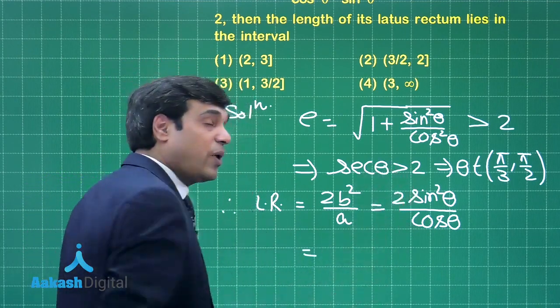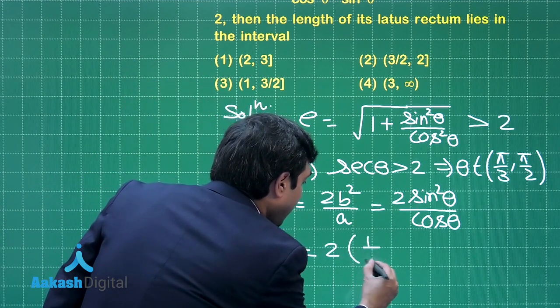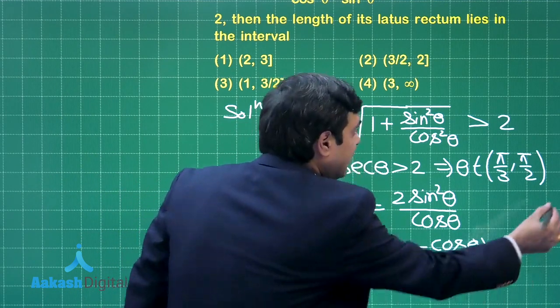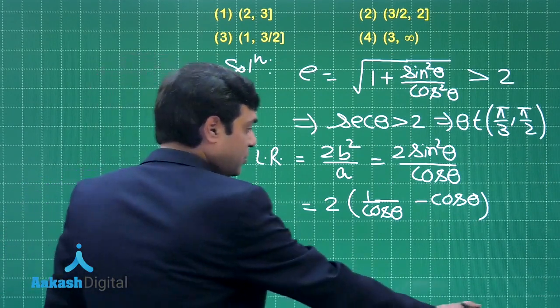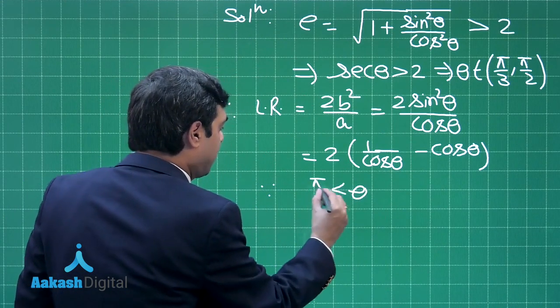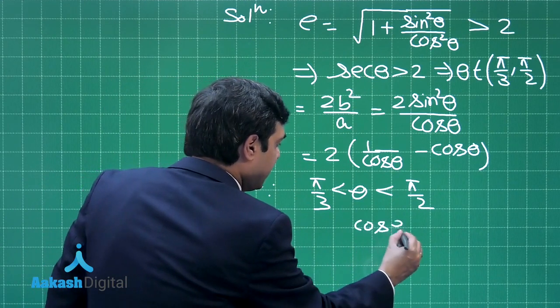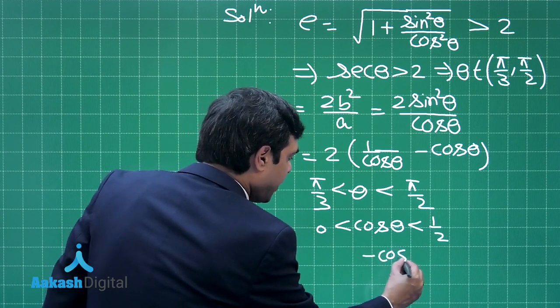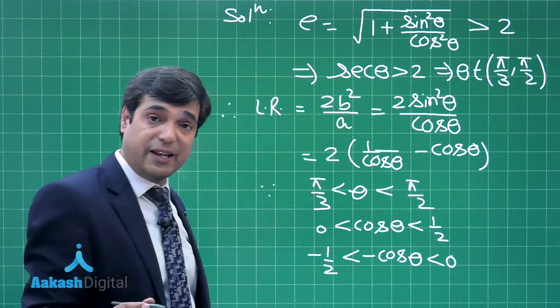You can write sin²θ is 1 - cos²θ. So it is 2 times (1/cos θ - cos θ). This is clear. Now, since theta is in the interval π/3 to π/2, let us write down: cos θ is lying in the interval 0 to 1/2. Minus cos θ is lying in the interval -1/2 to 0.